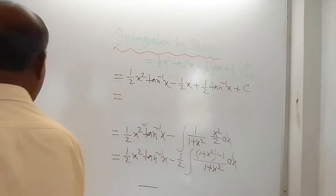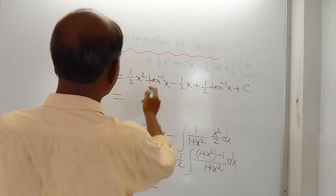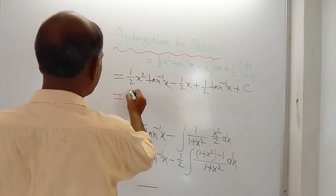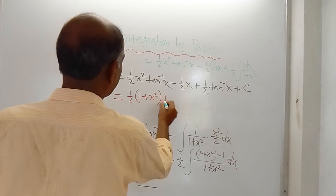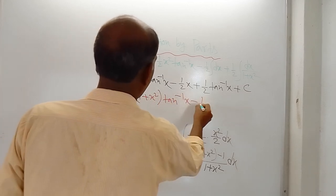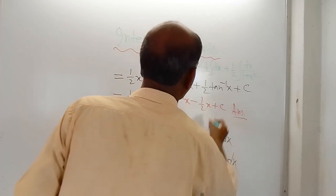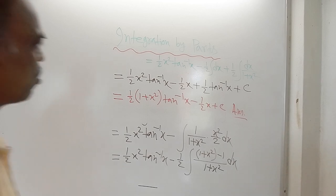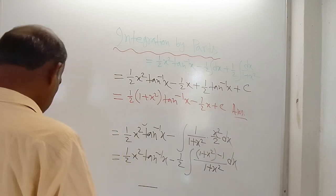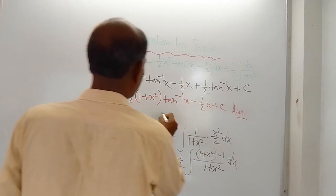Actually the solution is over — I am just rearranging the terms. Half is there, tan inverse x is there, so you write this way: half times 1 plus x squared times tan inverse x, minus half of x, plus c. So this is the answer to the given problem — half tan inverse x times 1 plus x squared, minus half x, plus c. This is the solution to the given problem.